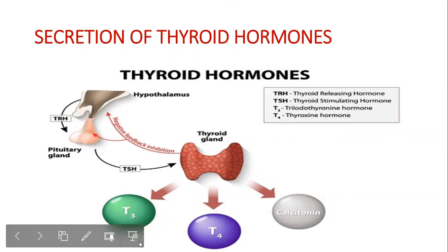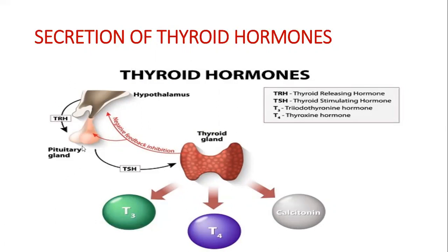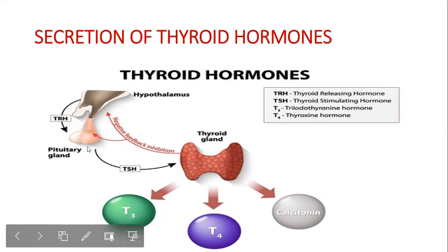So the thyroid gland releases T3, T4, and calcitonin under the control of TSH from the anterior pituitary, which is in turn induced by thyrotropin releasing hormone from the hypothalamus. The amount of circulating thyroid hormones is also regulated by negative feedback inhibition. When thyroid levels are very high, there is a suppression of TSH, which in turn suppresses TRH.